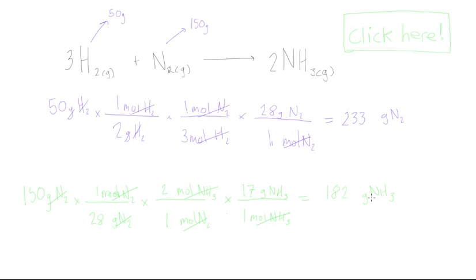182 grams of ammonia - this is our answer. This is how many grams of product we get if we combine 150 grams of nitrogen with 50 grams of hydrogen. This makes sense because we said at the beginning that our answer has to be between 150 and 200 grams, and 182 grams is reasonable.